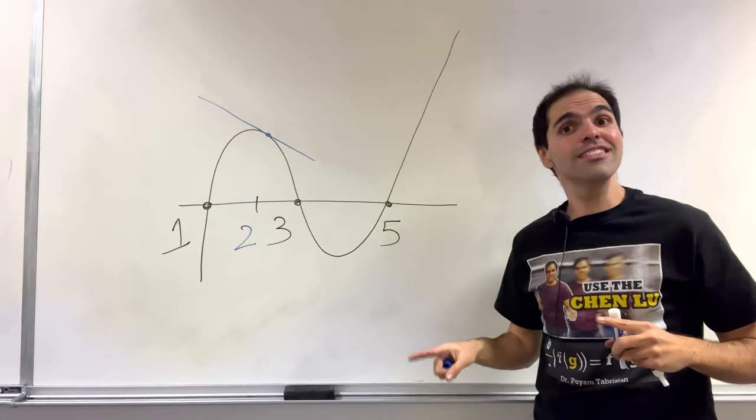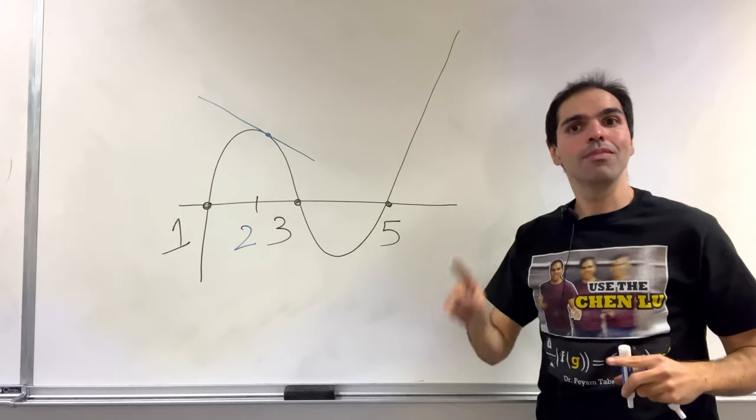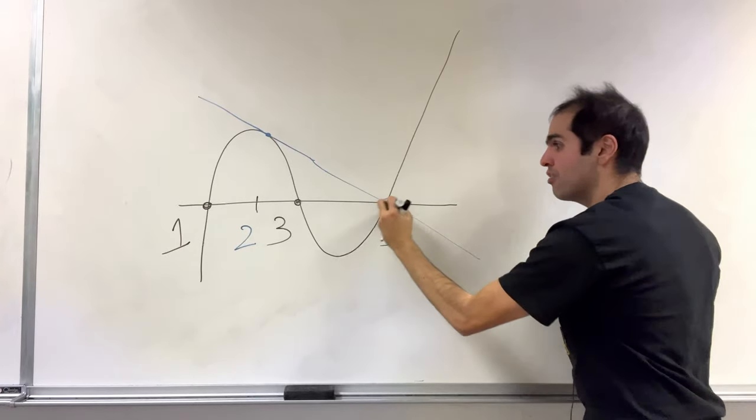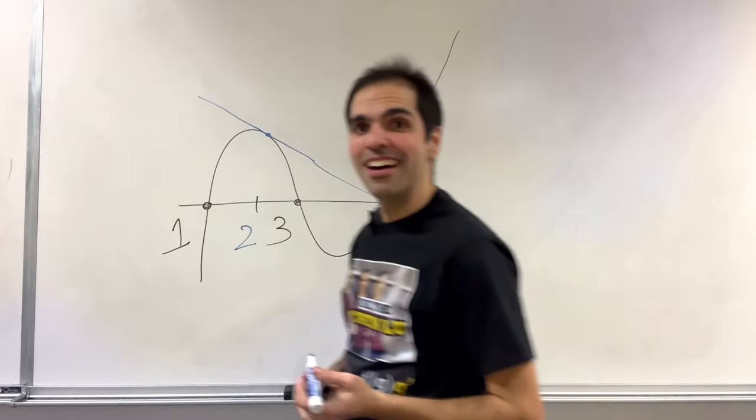The question is, suppose you consider the tangent line going through this average. The question is, where does this tangent line or where does this projectile land?